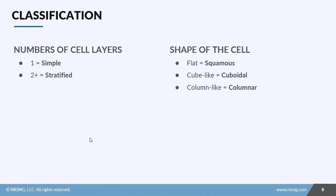The last thing I want to talk about is classification. There's two things we look at to classify epithelial tissues: the number of cell layers and the shape of the cells in the top layer. If there's only one layer we call that simple. If there are two or more layers we call that stratified.